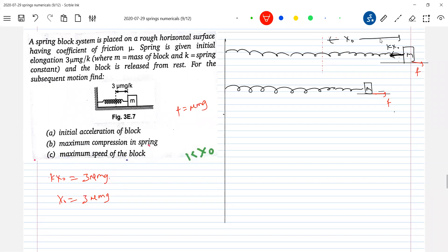No, this is sorry. It should be... Okay, fine. Yes, sir. Initial elongation is this much. Or kx0 equal to 3μmg when I did. Okay. So now definitely kx0 greater than f. So you can see that from here kx0 greater than f. So block will accelerate.